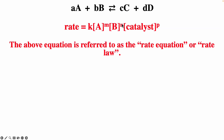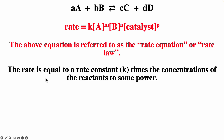For this reaction — A plus B goes to C plus D, where the lowercase letters are coefficients and uppercase indicate the species — we can immediately write down the rate equation: rate equals K times the concentration of the reactants to some power, which has to be determined experimentally. If you have a catalyst, that also has to be included. The rate is equal to the rate constant times the concentration of the reactants to some power.